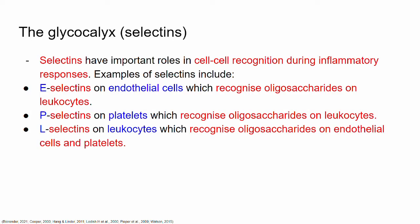These selectins are involved in cell-to-cell recognition, specifically during inflammatory responses. They are proteins that recognize oligosaccharide sequences on other cell types. There are three main types of selectins, including E-selectins, which are proteins expressed on endothelial cells. These E-selectins recognize oligosaccharides on leukocytes.